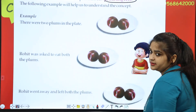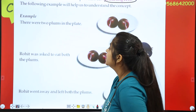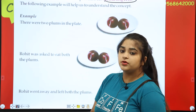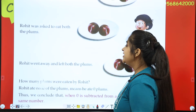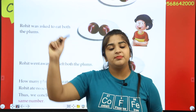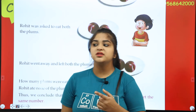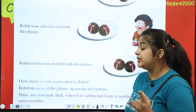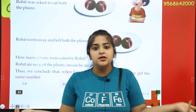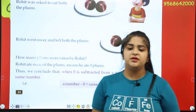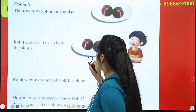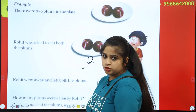There were two plums in the plate. Rohit was asked to eat both the plums, but he didn't like the plum fruit. Mother said to him, eat the two plums. But Rohit went away and left both the plums. How many plums were eaten by Rohit? Zero — nothing. He didn't eat anything because he didn't feel good.